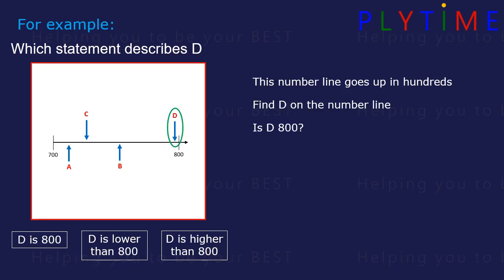Is D exactly 800? No, it's not. Is D higher than 800? No, it's not. It's between 700 and 800. Is it lower than 800? Yes, it is. So the answer is the second answer. It's lower than 800.